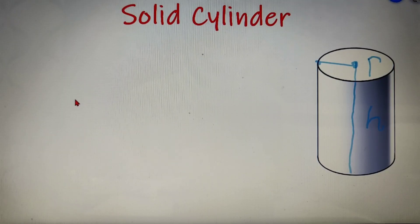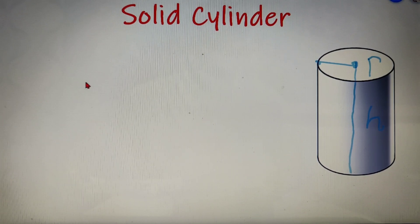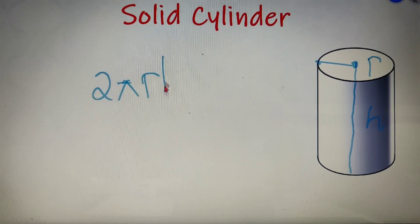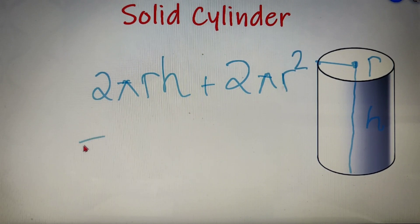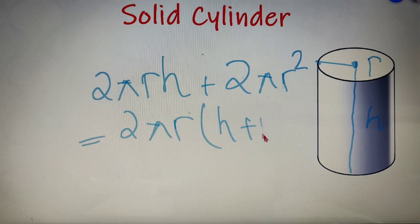The total surface area of a solid cylinder equals the curved surface area plus the area of the two bases. The curved surface area is 2πrh, the area of the upper base is πr², and the area of the lower base is also πr², giving 2πr². So the total surface area equals 2πr(h + r).